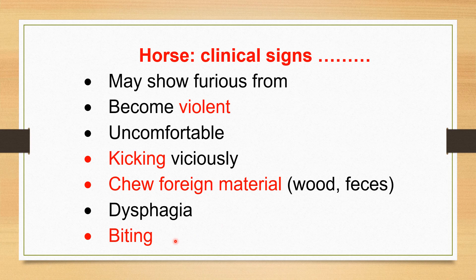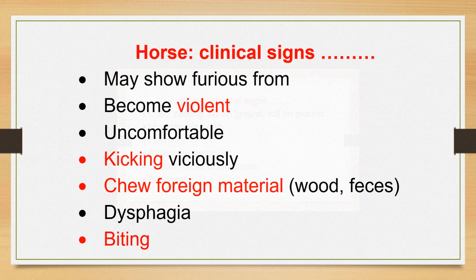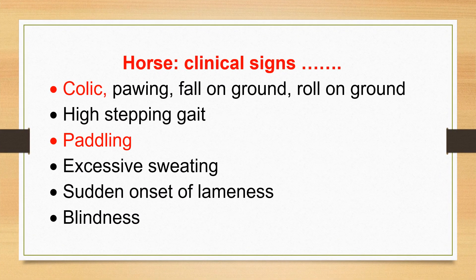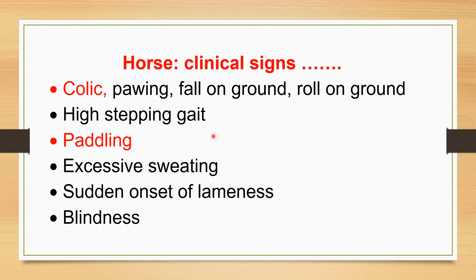Biting is also commonly observed in horses. A colic-type symptom is also observed — the animal is frequently pawing on the ground, falling to the ground, and rolling on the ground, just like colic. When the animal moves due to excitation, there is a high-stepping gait, as if the animal is jumping. There is pedaling movement and excitation of muscles, causing excessive sweating. Then there is sudden onset of lameness and paralysis, and the animal may become blind.